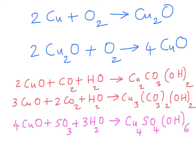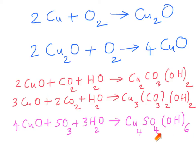Since coal was the major fuel source for the American industry in the 19th and early 20th century, there are sulfur compounds in the air. So the copper oxide also reacts with the sulfur compounds in the air and moisture to form a combination of copper sulfate and copper hydroxide, which is kind of greenish in color.